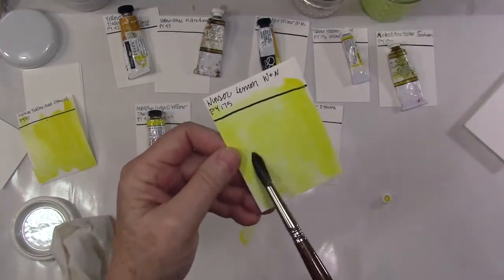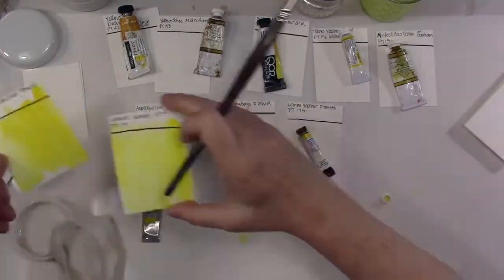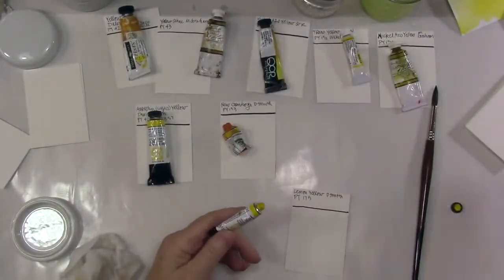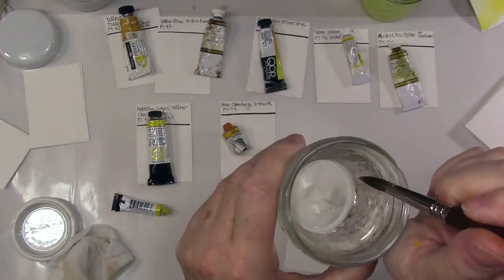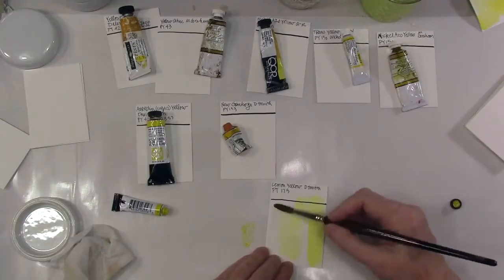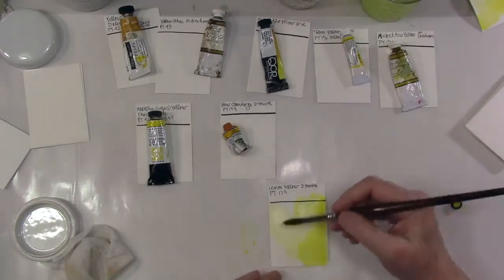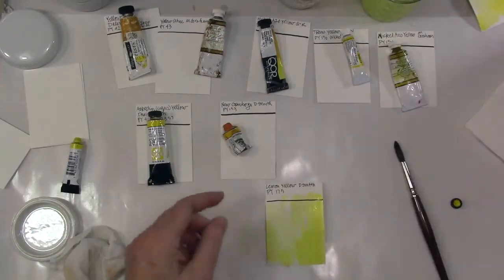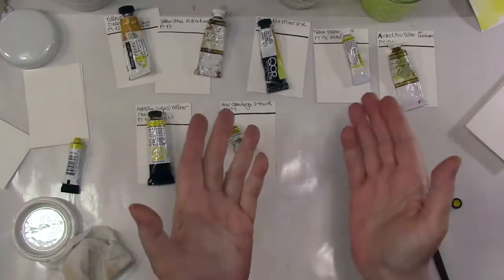So I wound up with a couple of these because of the names of the paints. Here's the lemon yellow from Daniel Smith, also PY 175. Kind of frustrating to spend my money on things that I don't need to. To know these, you don't have to memorize the PY numbers or the pigment numbers, but if you are looking for a color it's a really good idea to have the numbers somewhere so that you can look at them and say that's a match, they're the same exact pigment.